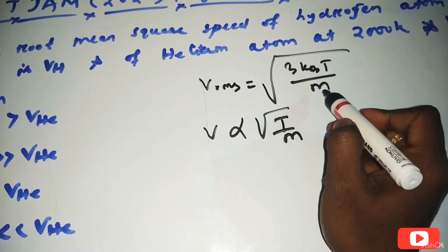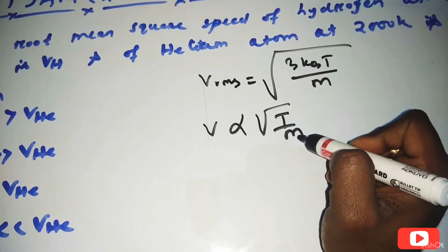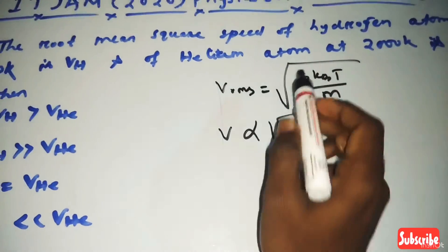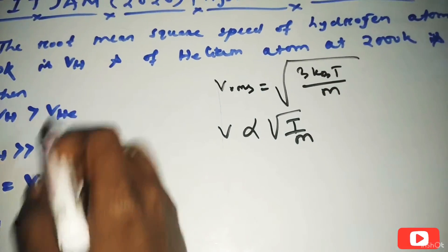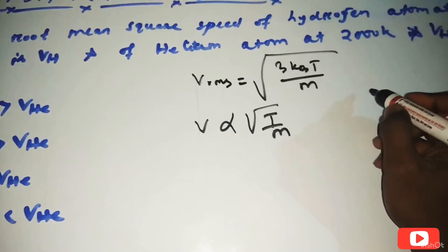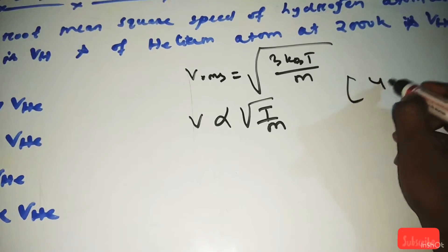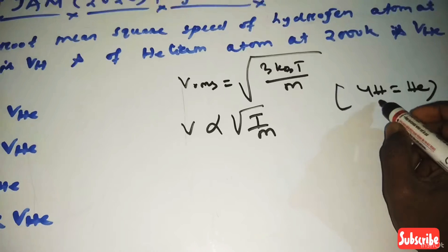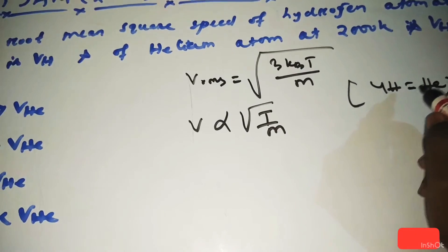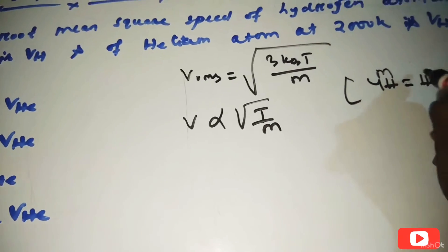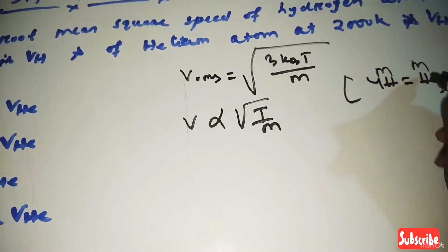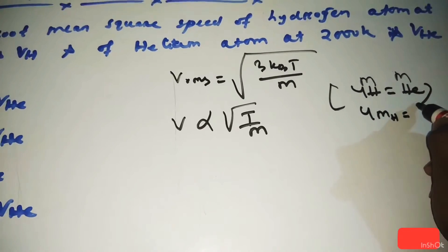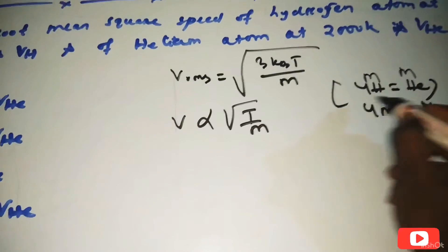So V is proportional to √(T/m). We can write that V is directly proportional to √T and inversely proportional to √m. We know that for hydrogen, the mass is 1 unit, and for helium, the mass is 4 units. So mass of helium = 4 × mass of hydrogen.